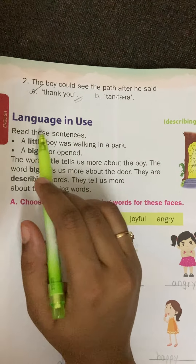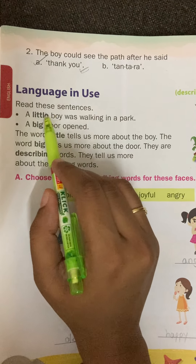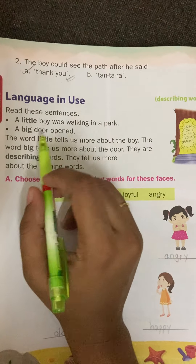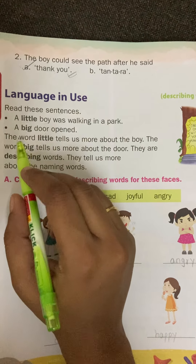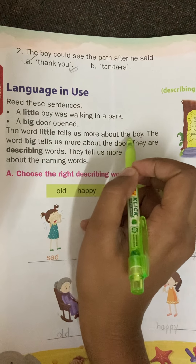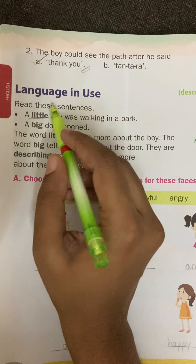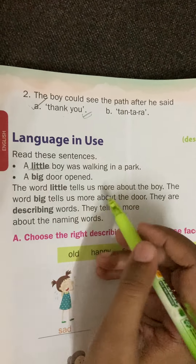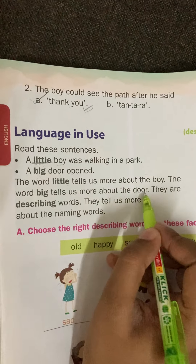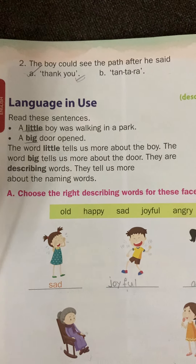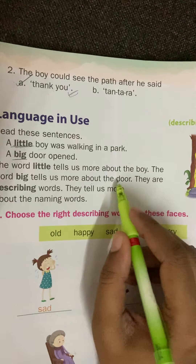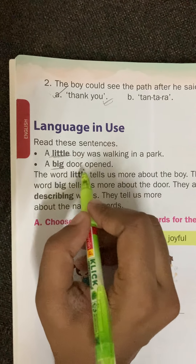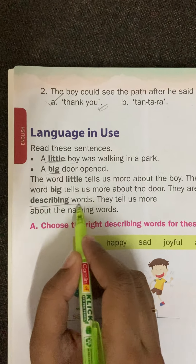Now language in use. Read these sentences: 'A little boy was walking in a park' and 'A big door opened.' The word 'little' tells us more about the boy — how small the boy is. The word 'big' tells us more about the door — how big the door is. So they are describing words.